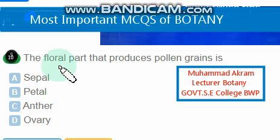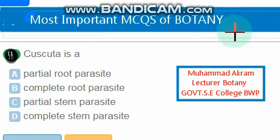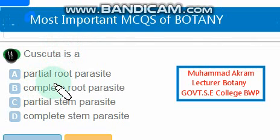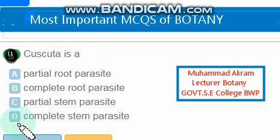The floral part that produces pollen grains: sepal — no; petal — no; anther — the right option is option C, the anther. Cuscuta is a complete stem parasite — option D is the right option.